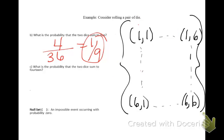What is the probability that the 2 dice sum to 14? Summing to 14 is not possible — the largest sum that could happen would be 6 plus 6, or 12. So a sum of 14 cannot occur. We call this the null set, an impossible event, and the probability of an impossible event is 0.